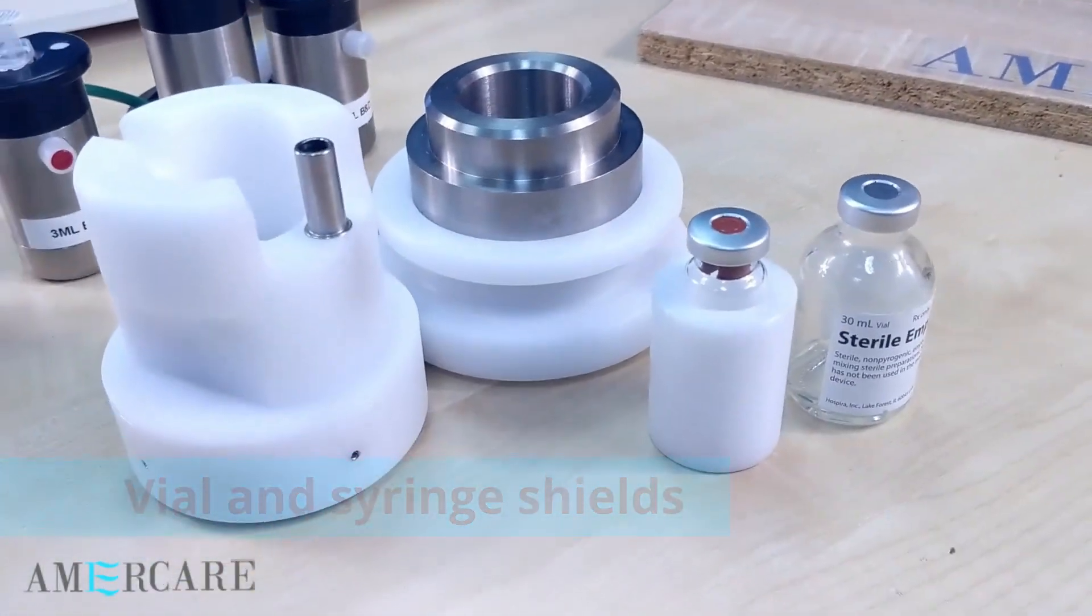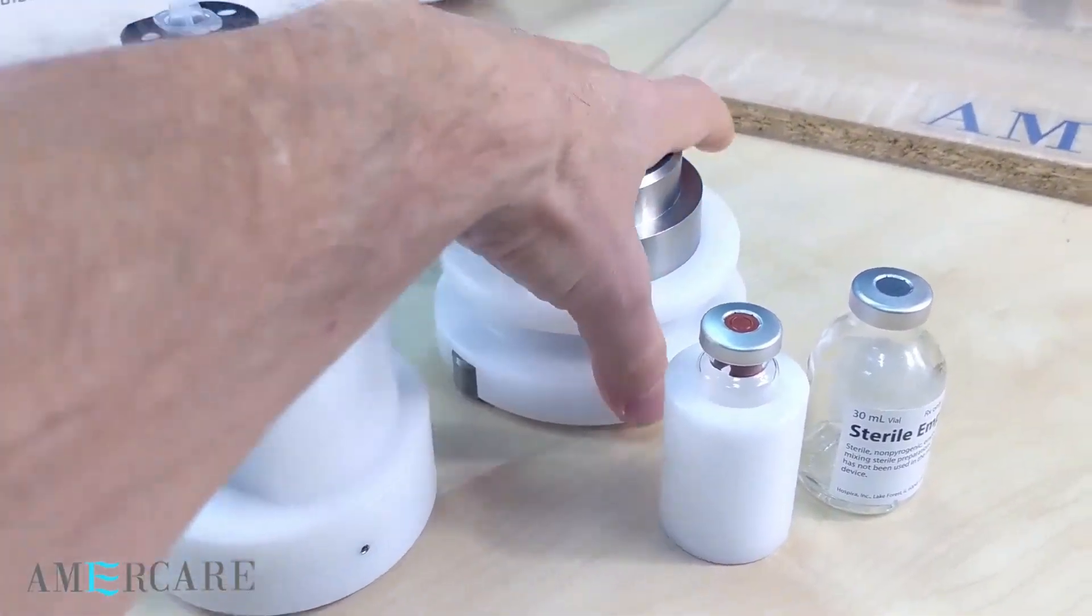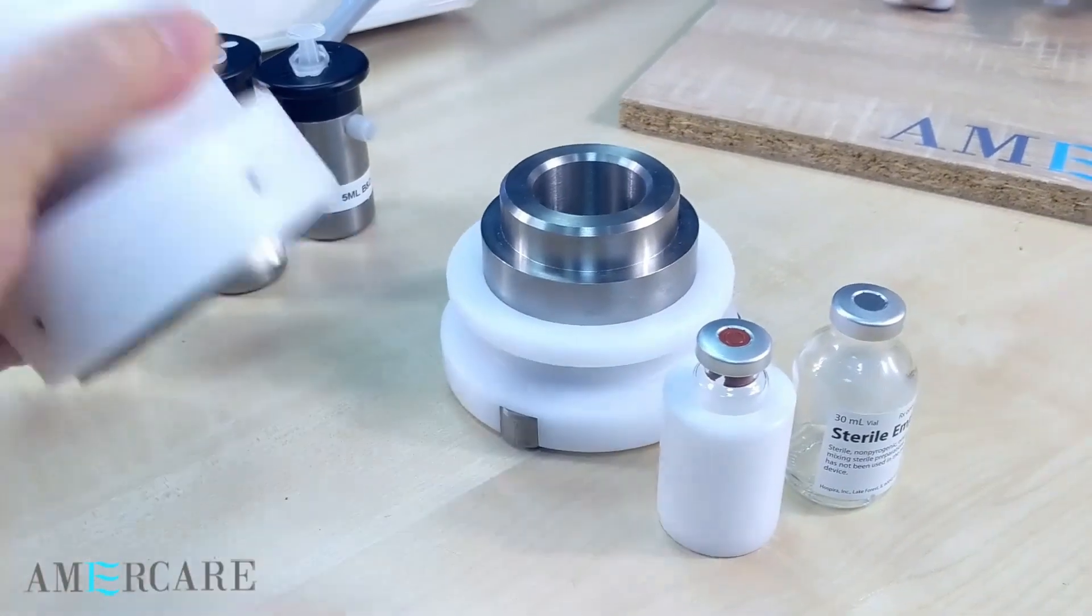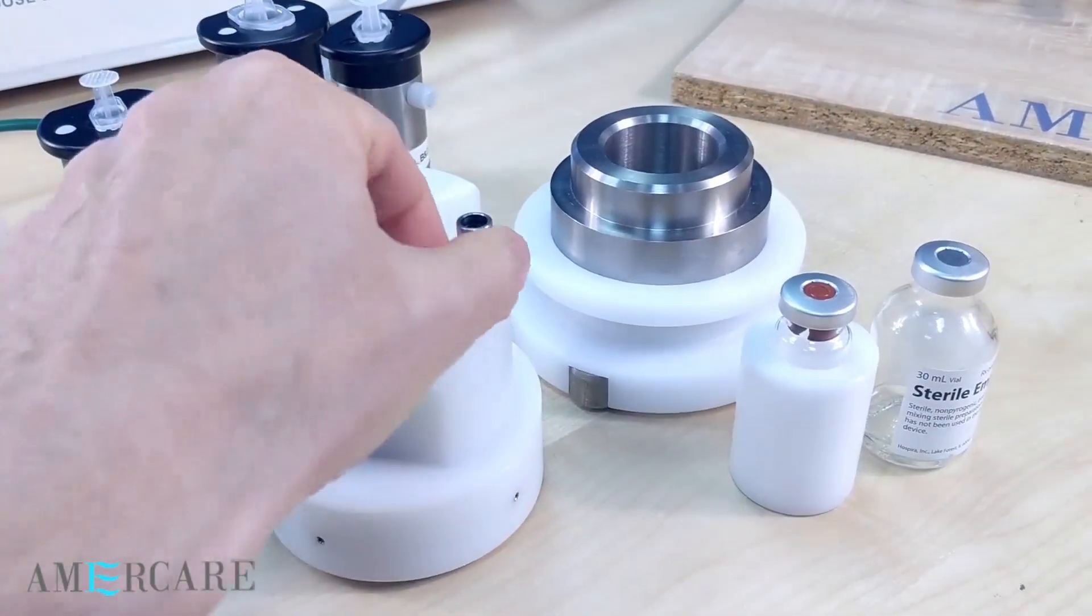The vial shield consists of two parts: the base, which has rollers on the underside to aid movement, and the lid. This is fitted with a sheath holder, which we will discuss later.